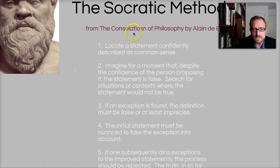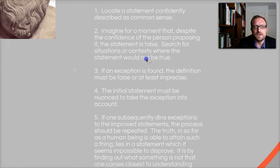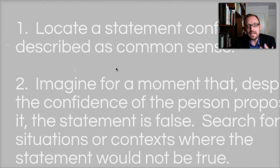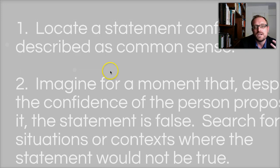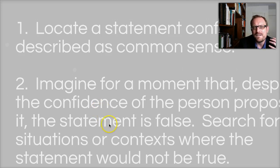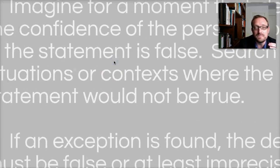From the Consolation of Philosophy by Alain de Botton, we have a step-by-step description of the Socratic method. It always begins between Socrates and his interlocutor. The first thing that happens is Socrates would locate a statement confidently described as common sense. For instance, in the Republic, Thrasymachus would tell Socrates that justice is the right of the stronger over the weaker — justice is just letting the strong man win, defined by the victor. These are ideas people believe and Thrasymachus thought were common sense. So first: find a statement confidently believed to be common sense truth.